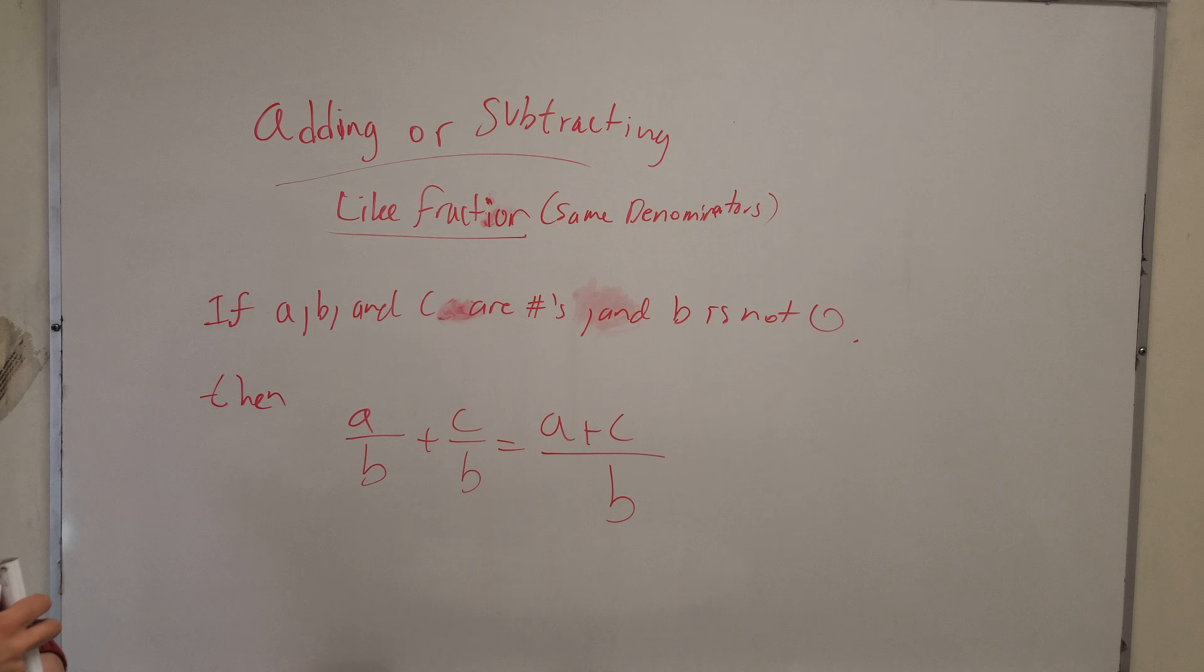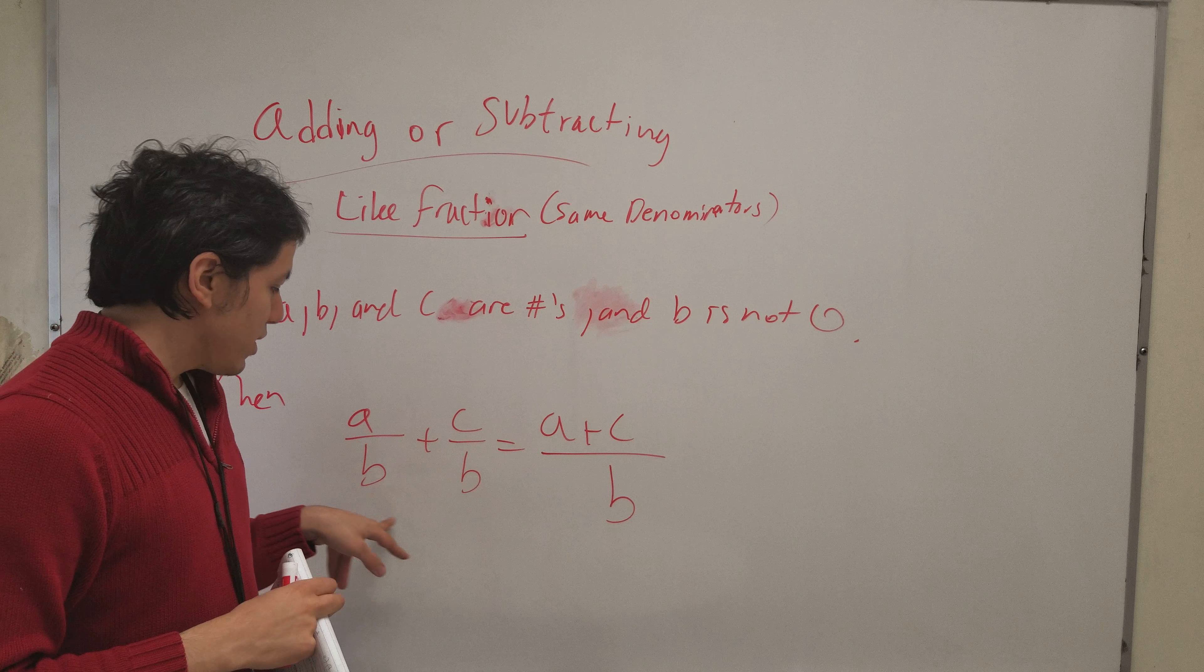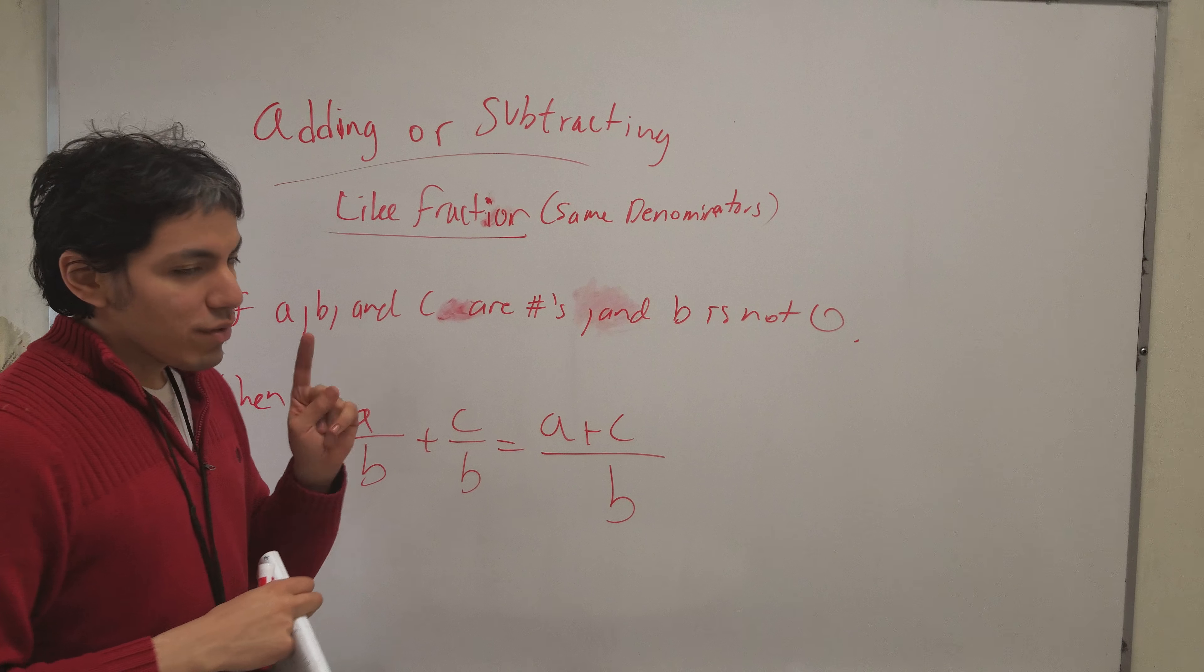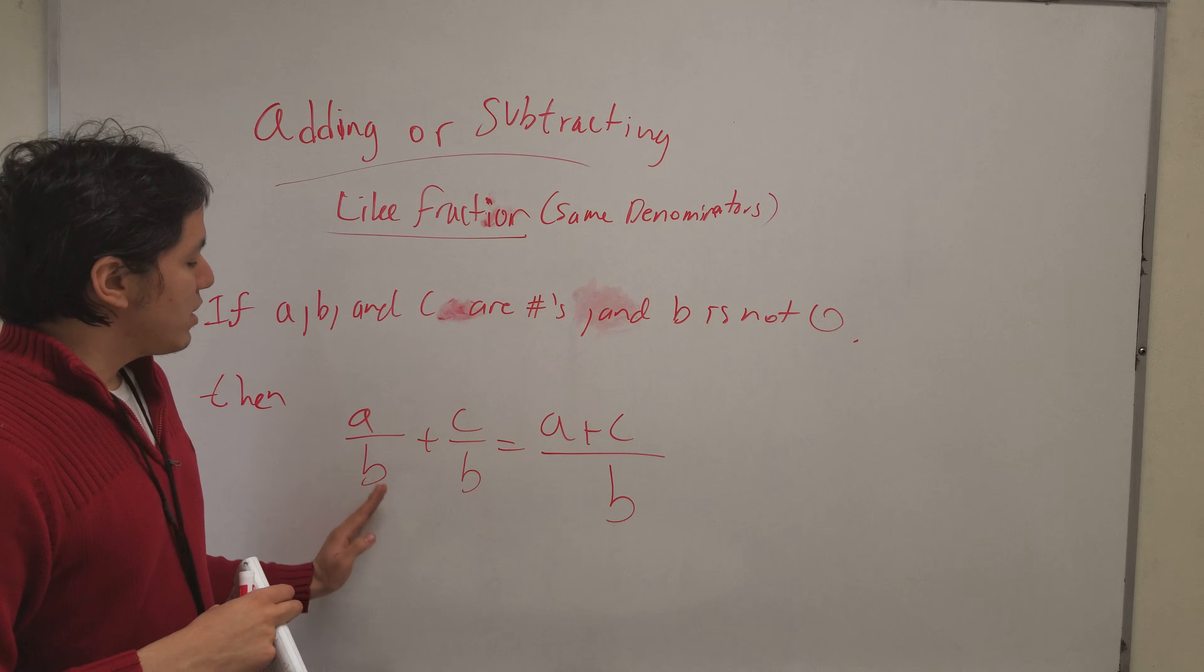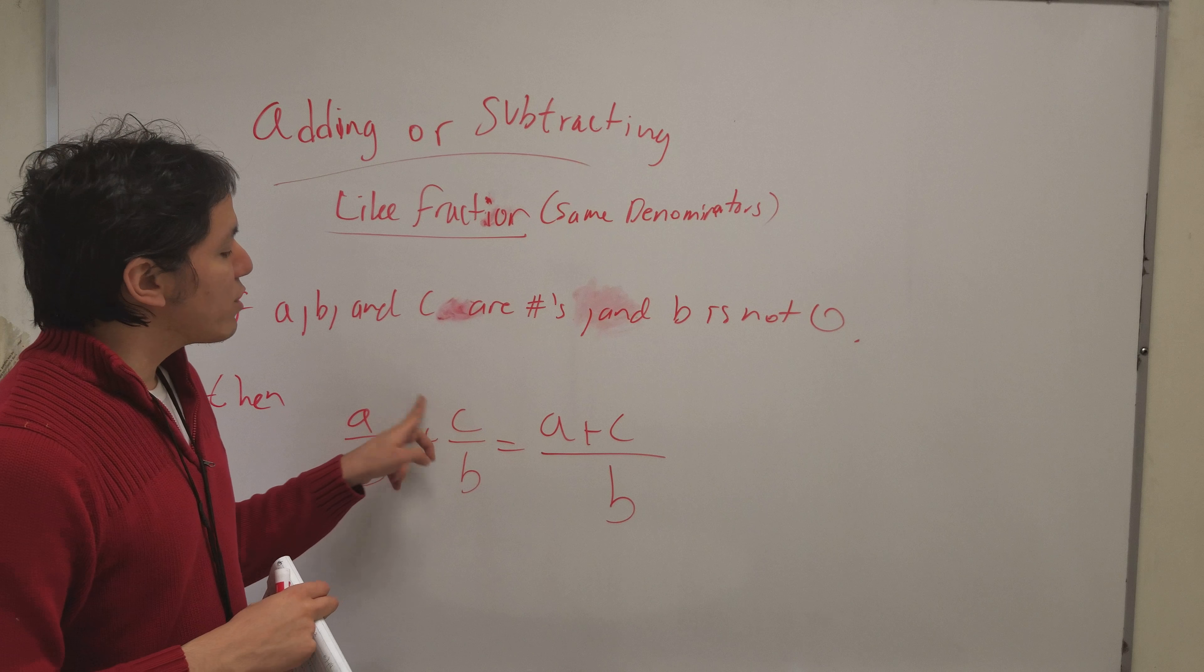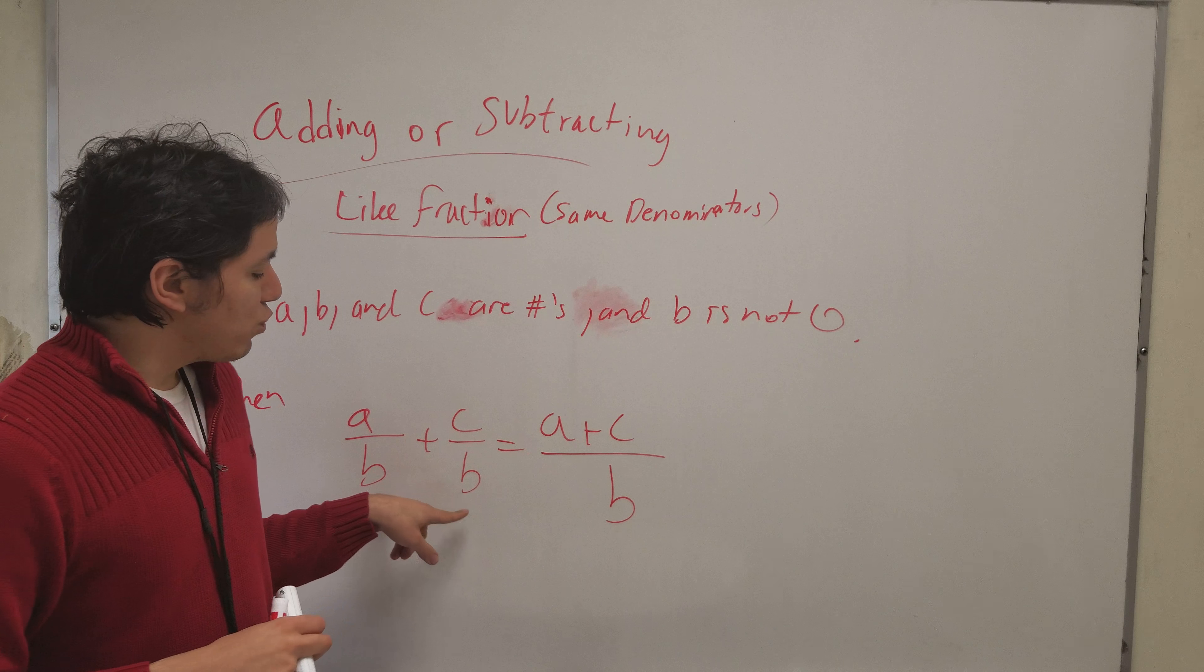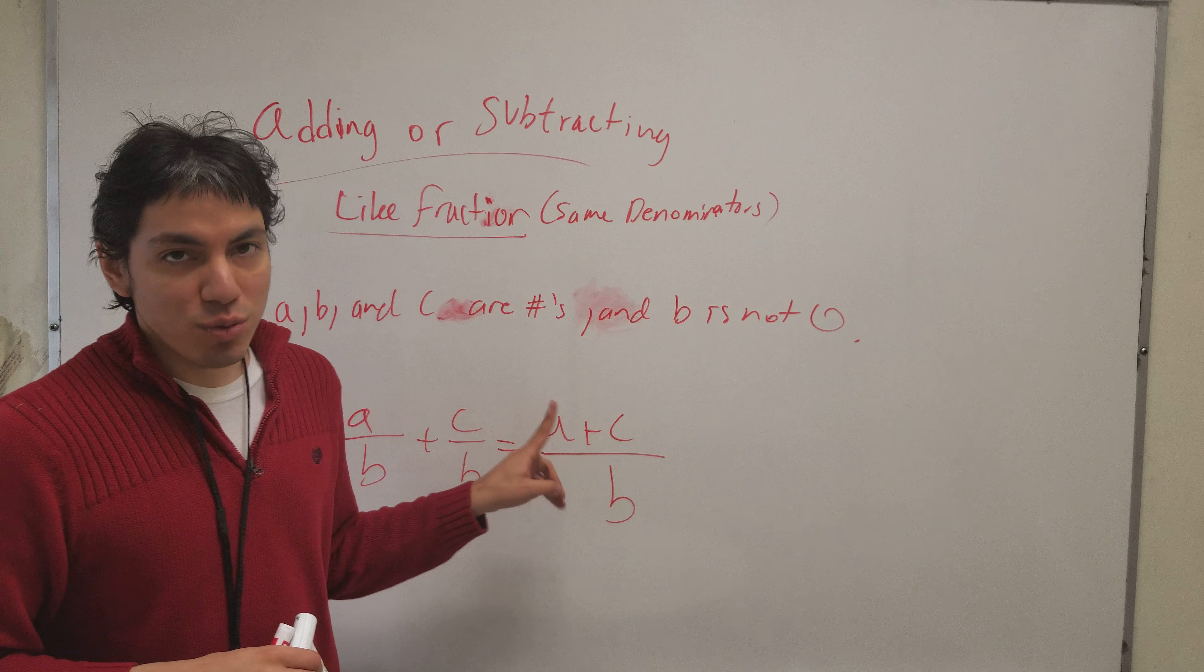Now, keep in mind that when B is not zero that means this can work. Always have to remember that. Anyway, this is just a blueprint to tell you if I have two fractions with the numbers can be whatever numbers they want to be, but if they're the same you're allowed to take these two separate denominators and combine them into one.